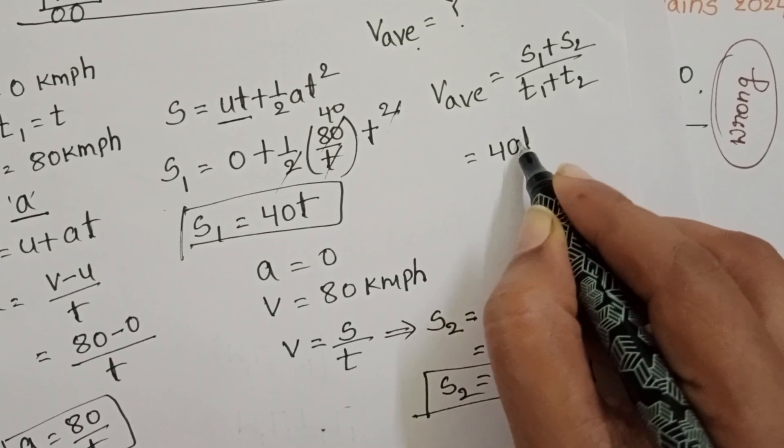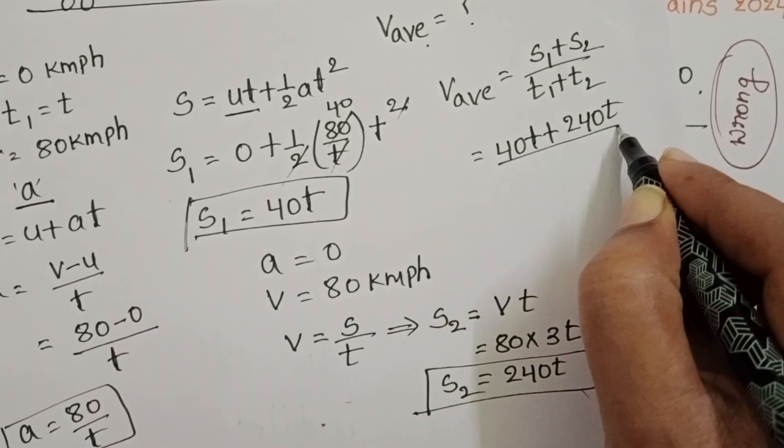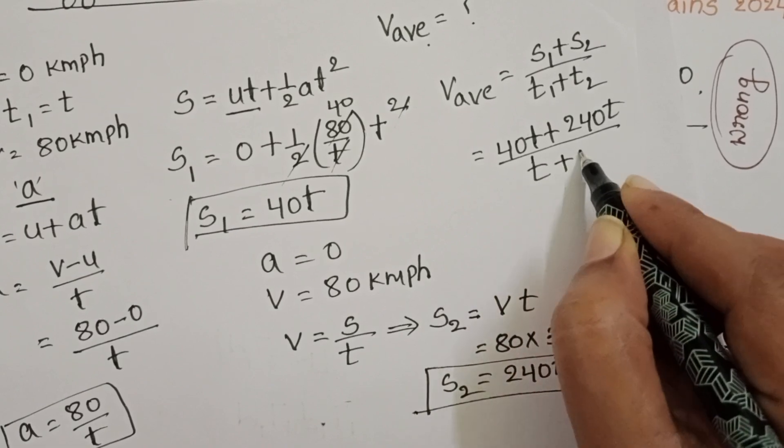S1, S1 is 40T and S2 is 240T. T1 is T and T2 is 3T.